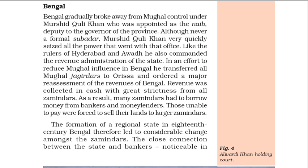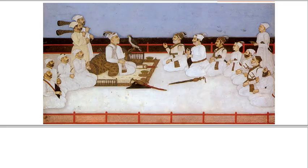Bengal. Bengal gradually broke away from Mughal control under Murshid Quli Khan, who was appointed as the Naib (deputy) to the governor of the province. Although never a formal Subadar, Murshid Quli Khan very quickly seized all the power that went with that office. Like the rulers of Hyderabad and Awadh, he also commanded the revenue administration of the state. In an effort to reduce Mughal influence in Bengal, he transferred all Mughal Jagirs to Orissa and ordered a major reassessment of the revenues of Bengal. Revenue was collected in cash with great strictness from all Zamindars. As a result, many Zamindars had to borrow money from bankers and moneylenders; those unable to pay were forced to sell their lands to larger Zamindars. The formation of a regional state in 18th century Bengal therefore led to considerable change amongst the Zamindars. The close connection between the state and bankers, noticeable in Hyderabad and Awadh as well, was evident in Bengal under the rule of Alivardi Khan (r. 1740–1756). During his reign, the banking house of Jagat Seth became extremely prosperous.